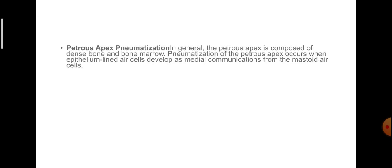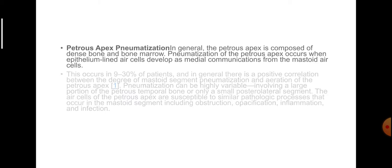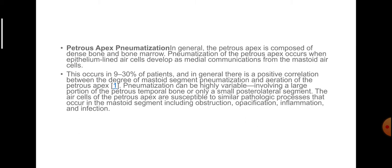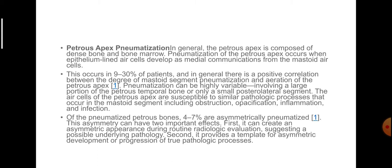Petrous apex pneumatization: In general, the petrous apex is composed of dense bone and bone marrow. Pneumatization occurs when epithelial-lined air cells develop as medial communications from the mastoid air cells. This occurs in 9% of patients, with a positive correlation between the degree of mastoid segment pneumatization and aeration of the petrous apex. Pneumatization can be highly variable, involving a large portion of the petrous temporal bone or only a small posterolateral segment. Air cells in the petrous apex are susceptible to similar pathologic processes as the mastoid, including obstruction, opacification, inflammation and infection.